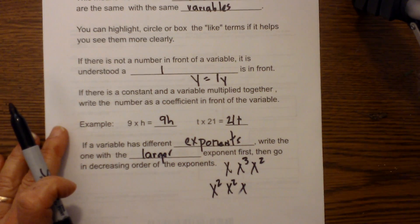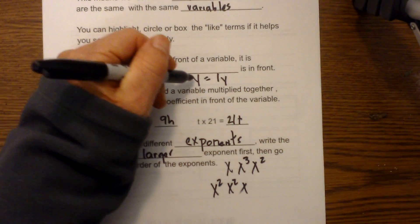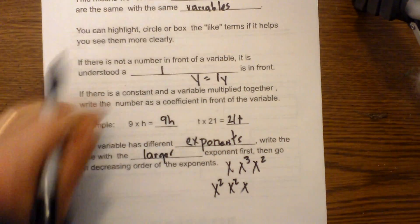Anytime there is not a number in front of the variable, it is understood that a 1 is in front. For instance, y would equal 1y.